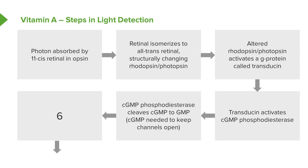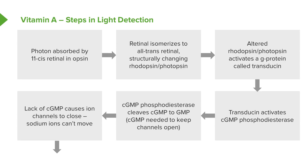The phosphodiesterase cleaves cyclic GMP, or cGMP, to produce GMP. cGMP is very important in the eye cell for keeping the unpolarized state. In the darkness, the eye cell is unpolarized, and that unpolarization is happening because ions can move into and out of the nerve cell. The movement of ions requires these channels to be open. If we close the channels, then what happens is the cell will start to hyperpolarize.